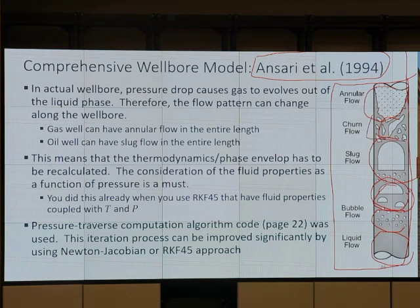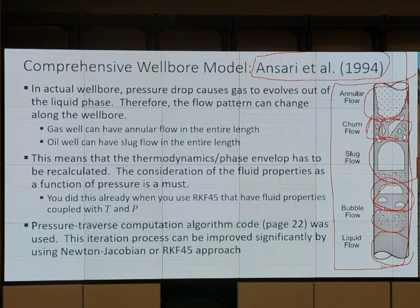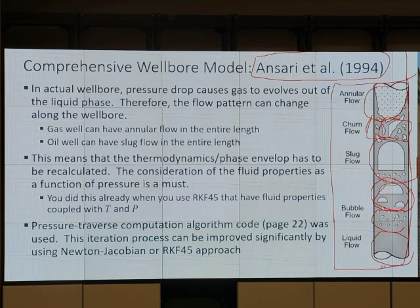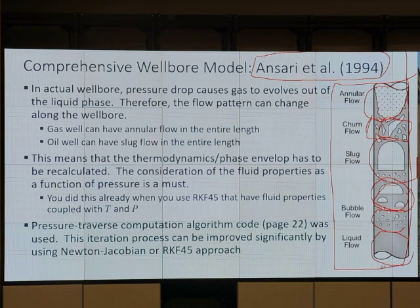Churn flow, in addition to appearing at the beginning of the pipe, is also the transition region between slug and annular flow. Between slug and annular, there's a small region called churn flow. It happens after slug — when V_sg increases and we're about to transition to annular, we may have churn, depending on the length.